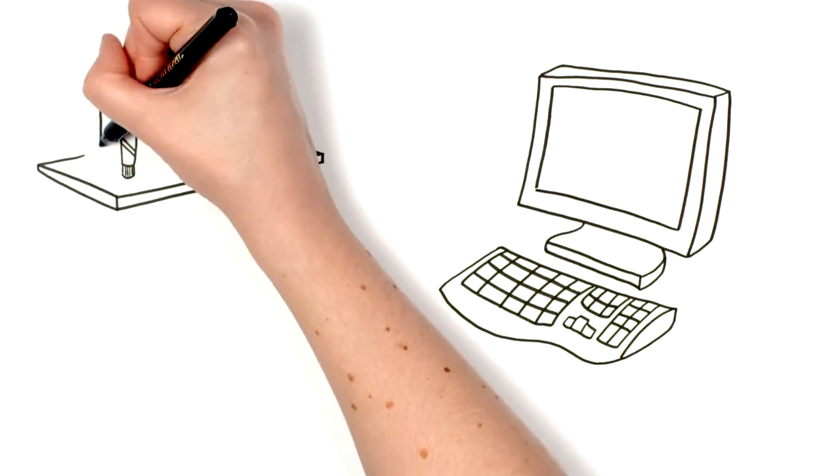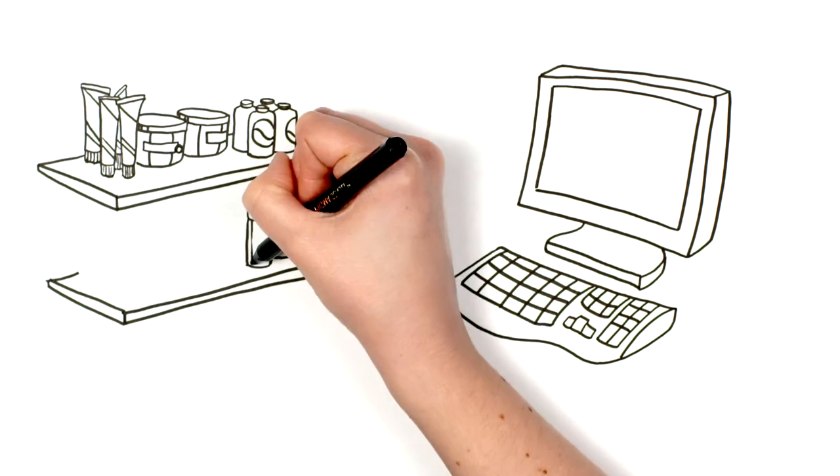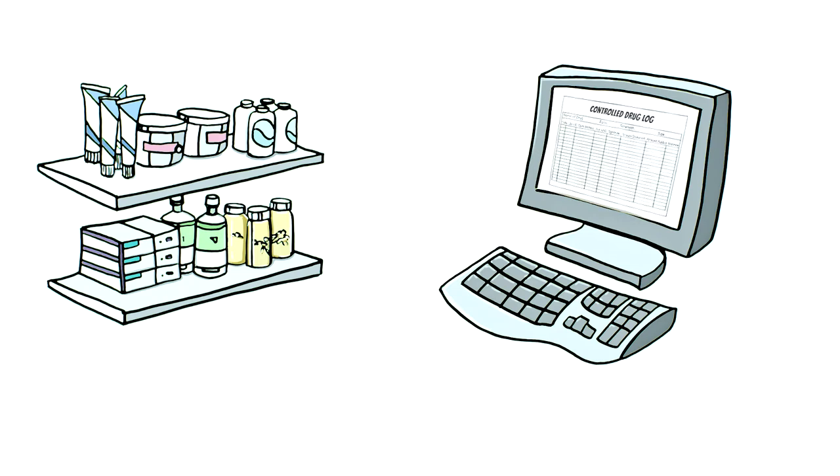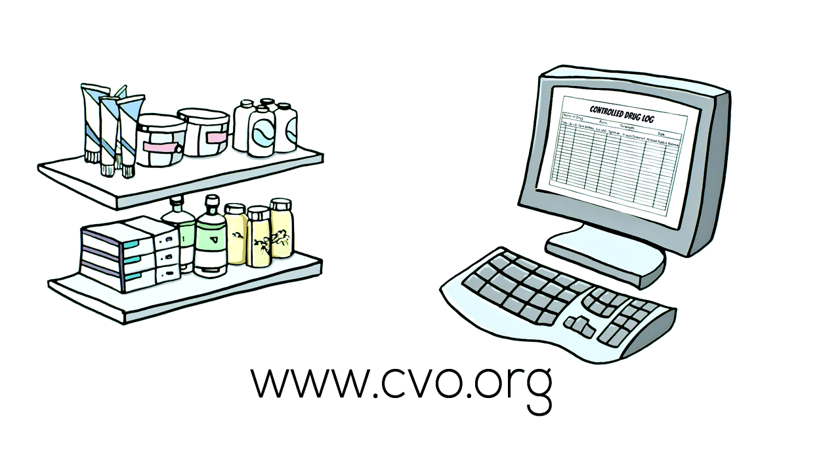An audit reconciles the actual inventory against the expected inventory, as determined from the controlled drug log. Frequent audits assist with inventory management and ensure irregularities are detected, resolved and reported in a timely fashion. For details on conducting controlled drug audits, visit cvo.org to watch an informative video.